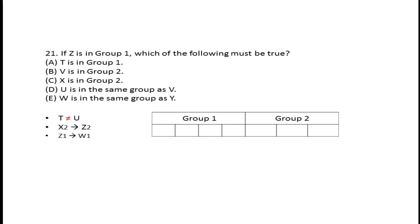Question 21: If Z is in Group 1, which of the following must be true? If Z goes to Group 1, then W also goes with it. T and U must be in different groups, so in Group 1...